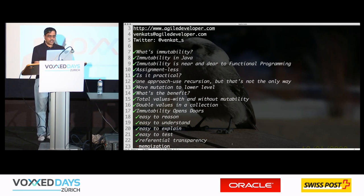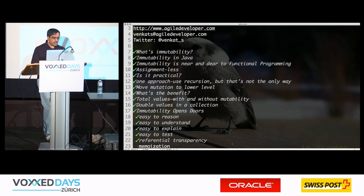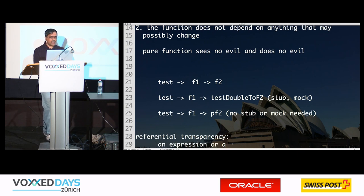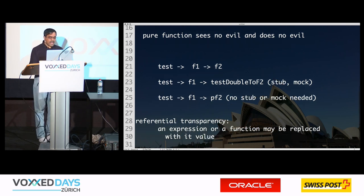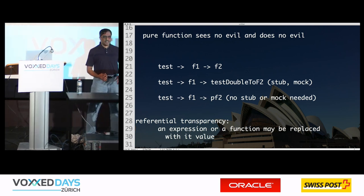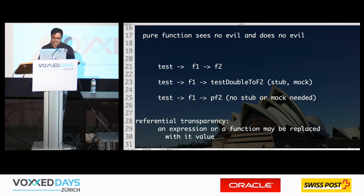The next benefit is referential transparency. What is referential transparency? An expression or a function may be replaced by its value. You are saying you can take an expression or function and replace it with its value. If I can replace it with the value, I don't have to do that work at runtime — this becomes really easy for us.